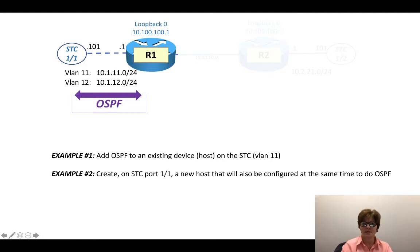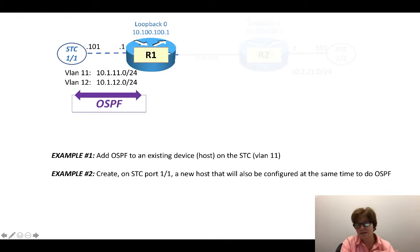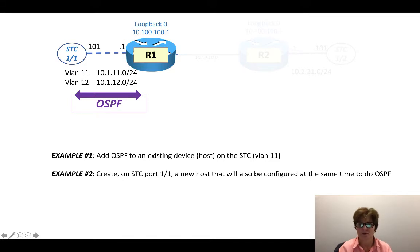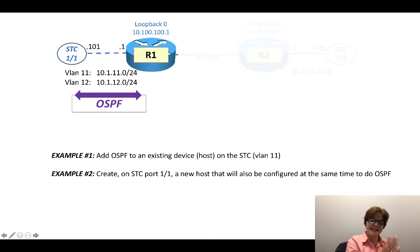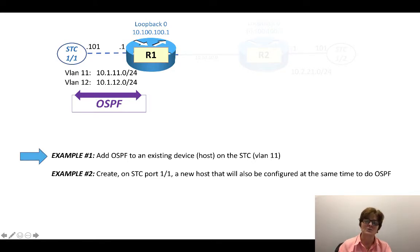There are two examples I'm going to give. One: we had left our environment with VLAN 11 already up and running, with a host at 10.1.11.101 on the Spirent Test Center side. Example one is taking that already existing host on the Spirent Test Center and adding OSPF to it. Example two will be creating a new device and host from scratch, knowing it's going to do OSPF and advertise prefixes.